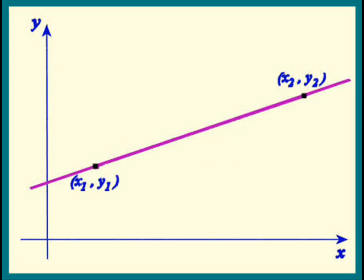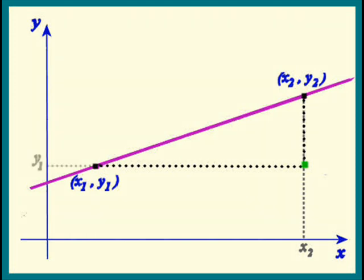Here is the run and the rise. Can we name that green point? Its x-coordinate is the same as x2, and its y-coordinate is the same as y1.